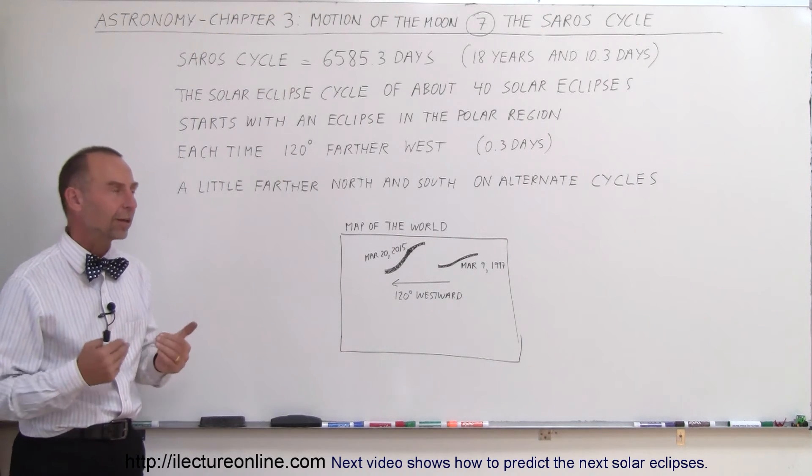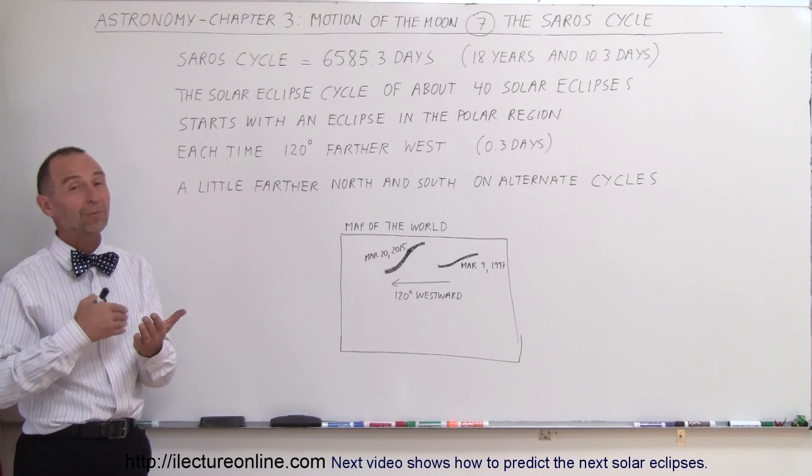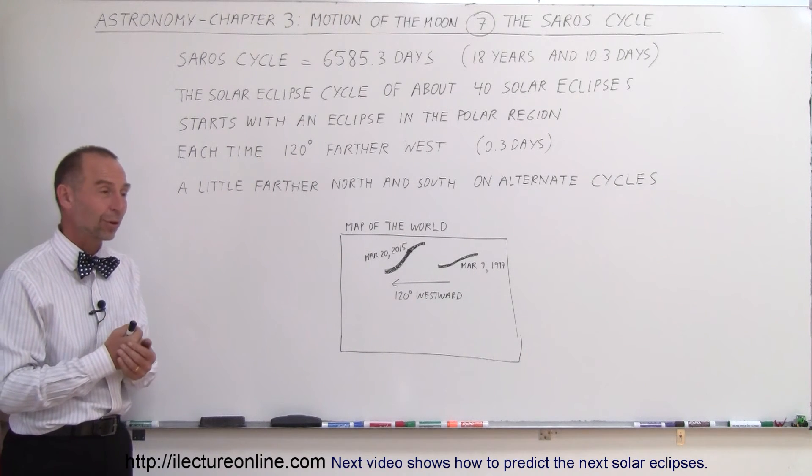So that's what's known as the Saros cycle. It's very interesting because of that, we have a really good way of predicting when the next solar eclipses will occur.